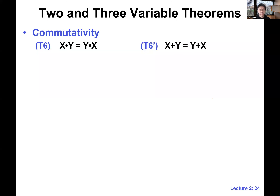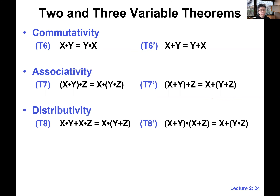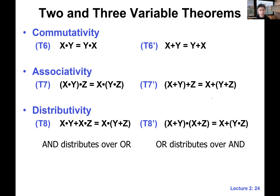Now let's look at some more interesting theorems involving more than one variable. The two-variable case: first is commutativity, which you know very well. Boolean algebra also satisfies associativity — we've seen this a lot in high school algebra. And we have distributivity: AND can distribute over OR, and OR can distribute over AND.